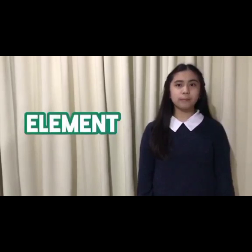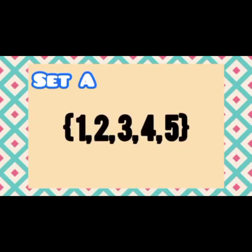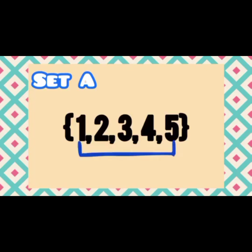Each member or object is called an element of the set. For example, in set A, we have the natural counting numbers under 6, which are 1, 2, 3, 4, and 5. Those numbers are elements.